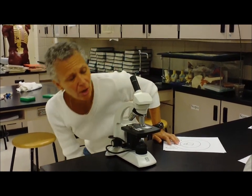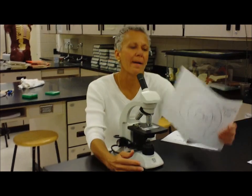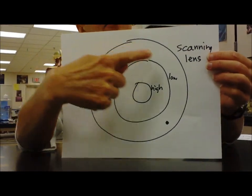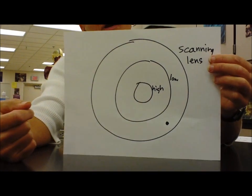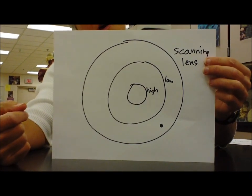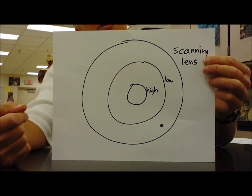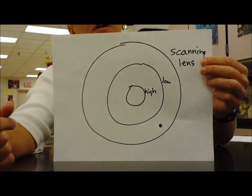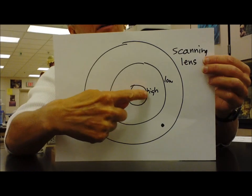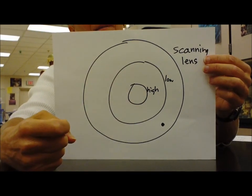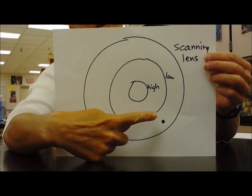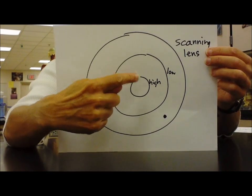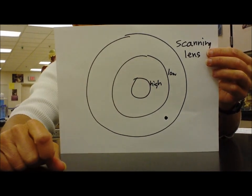Why is it important to center your object? Well here's why. On the scanning lens, you see everything in the outer big circle. As you move to the low power lens, you see less distance. You're only going to see what's in the second circle. And under the high power lens, you only see what's in the very center. So if this is your object under the scanning lens, and you don't move it at all, it will seem to have disappeared when you go to the higher powers.